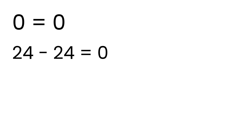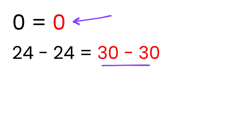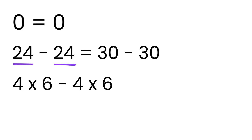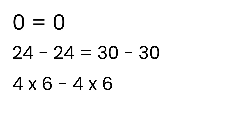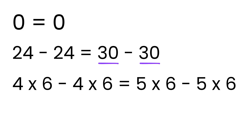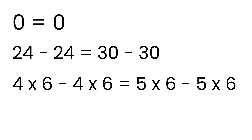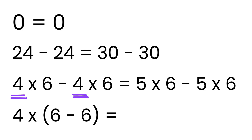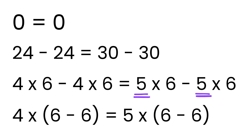Similarly, we can rewrite this 0 on the right-hand side as 30 minus 30, because 30 minus 30 is simply 0. Now we will factor out this 24 as 4 times 6, because 4 times 6 is 24. Similarly, we can factor out this 30 as 5 times 6, because 5 times 6 is 30. Then we take 4 common from the left side, so 4 times 6 minus 4 times 6 becomes 4 times bracket (6 minus 6). And from the right side, we take 5 common, so 5 times 6 minus 5 times 6 becomes 5 times bracket (6 minus 6).